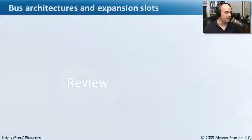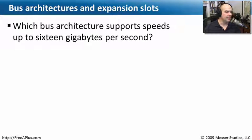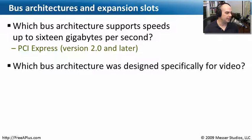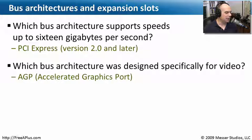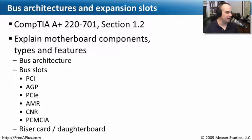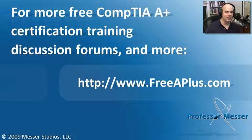Let's review bus architectures and expansion slots. Which bus architecture supports speeds up to 16 gigabytes per second? That would be PCI Express version 2.0 and later, which supports those higher speeds. Which bus architecture was designed specifically for video? That was the Accelerated Graphics Port, or AGP, from around the Pentium 3 timeframe — not seen much anymore, but a very useful video format. And what is a single communications path called in PCI Express? Just like lanes on a road, that would be a lane of communication. That covers PCI, AGP, PCI Express, AMR, CNR, and PCMCIA for laptops.